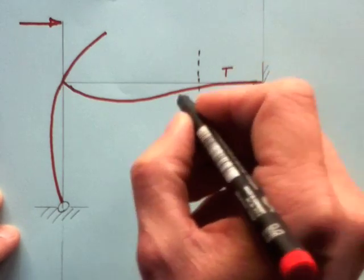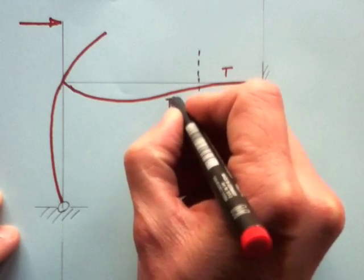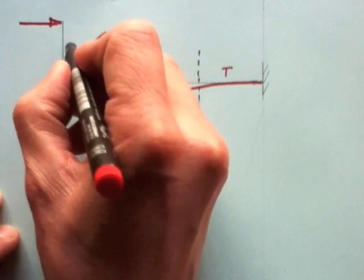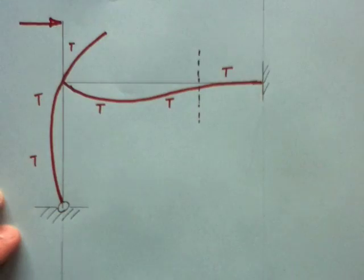To the right of this point of contra-flexure, we have hogging and hence tension on the top side. On the left, we have sagging and tension on the bottom. We can go around our diagram and highlight the side of the element which has tension on it.